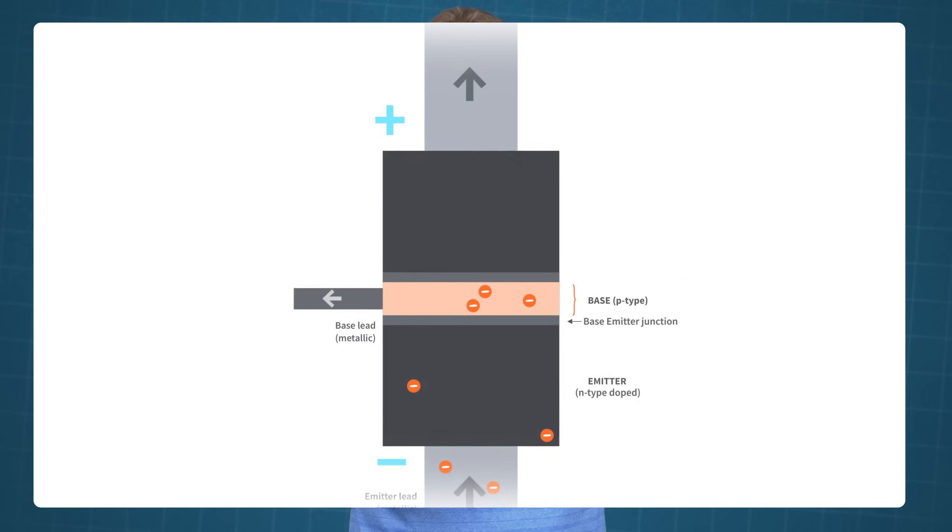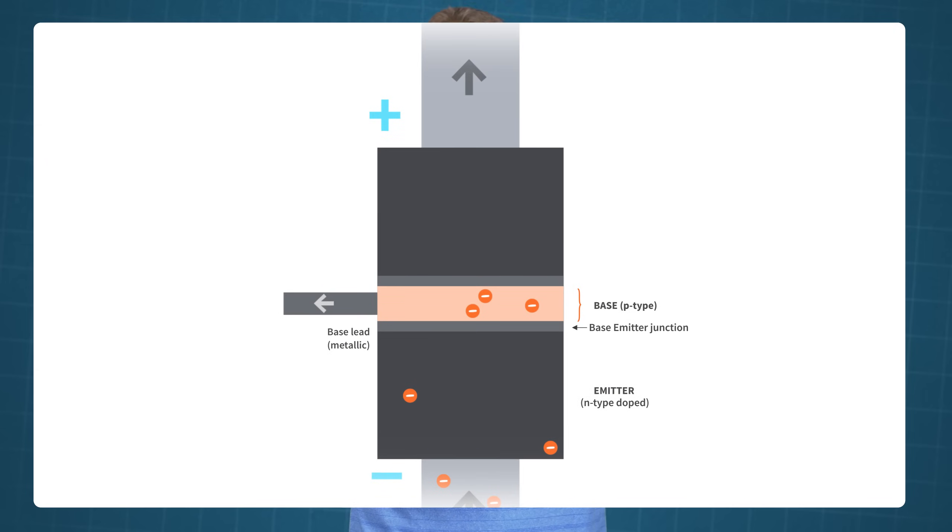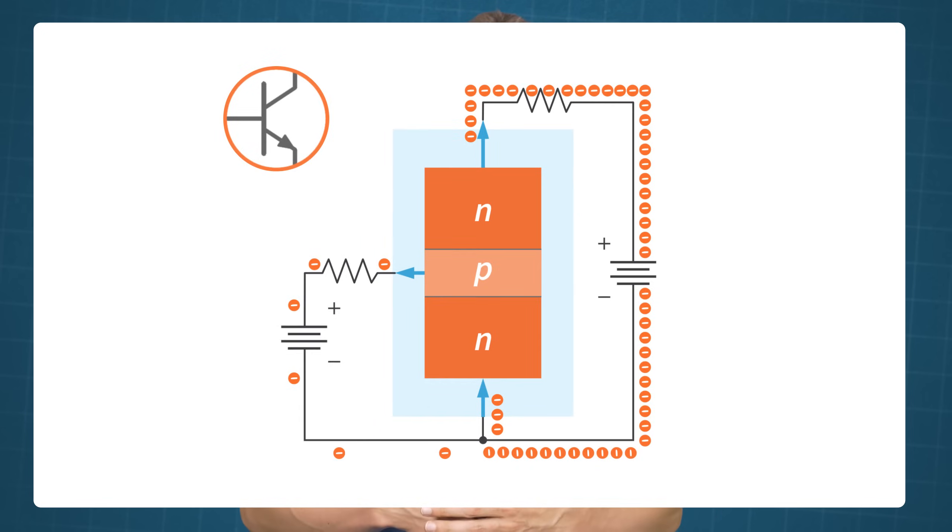The free electrons that entered the base region but didn't recombine with the holes move toward the reverse biased base-collector junction. Since the collector region is connected to the positive side of the external bias voltage, the free electrons are attracted to the positive side and are swept across into the collector region. They exit the collector region and also move through the metallic collector lead into the circuit and return into the emitter region.